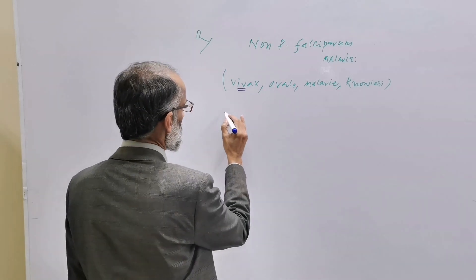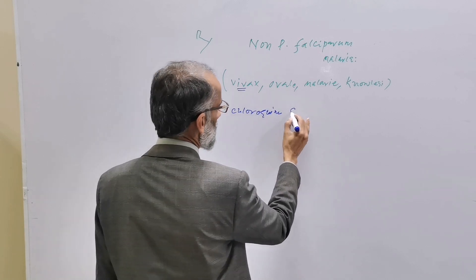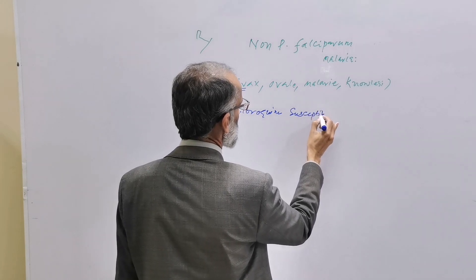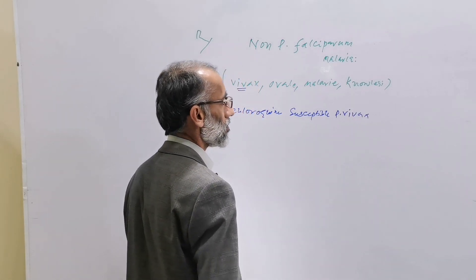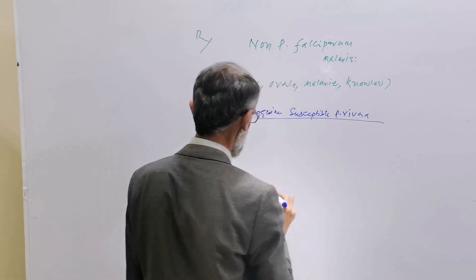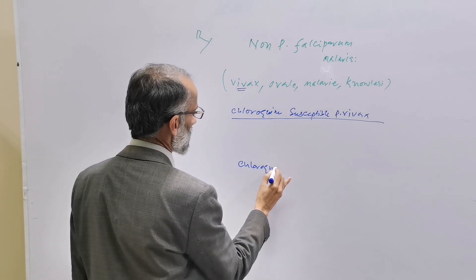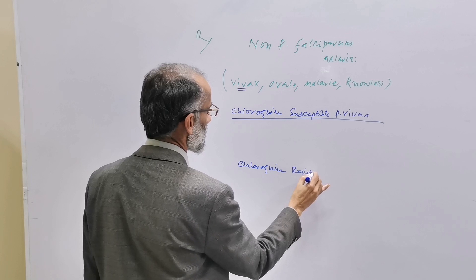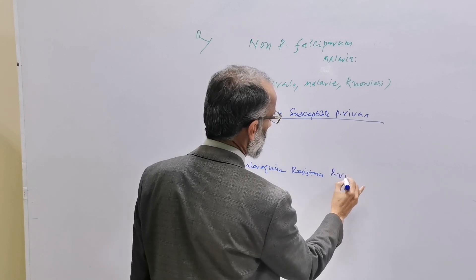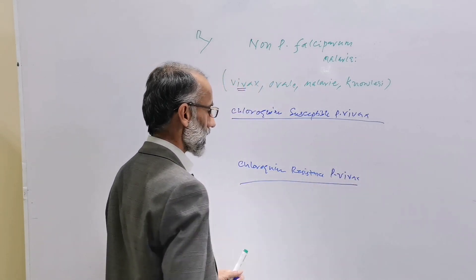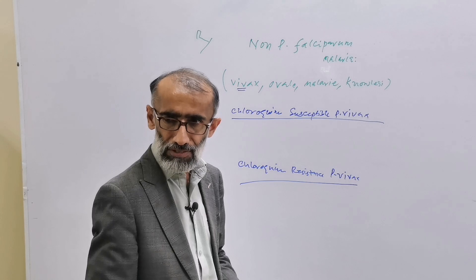Treatment of Plasmodium vivax depends on the susceptibility to chloroquine. There are two categories: chloroquine-susceptible Plasmodium vivax malaria, and chloroquine-resistant Plasmodium vivax malaria.